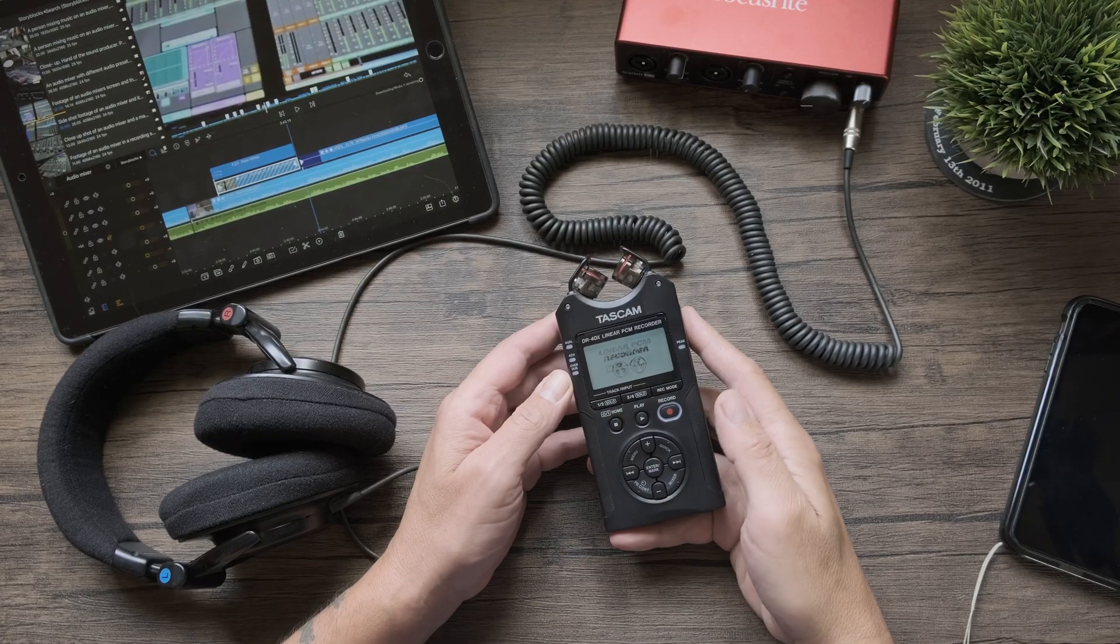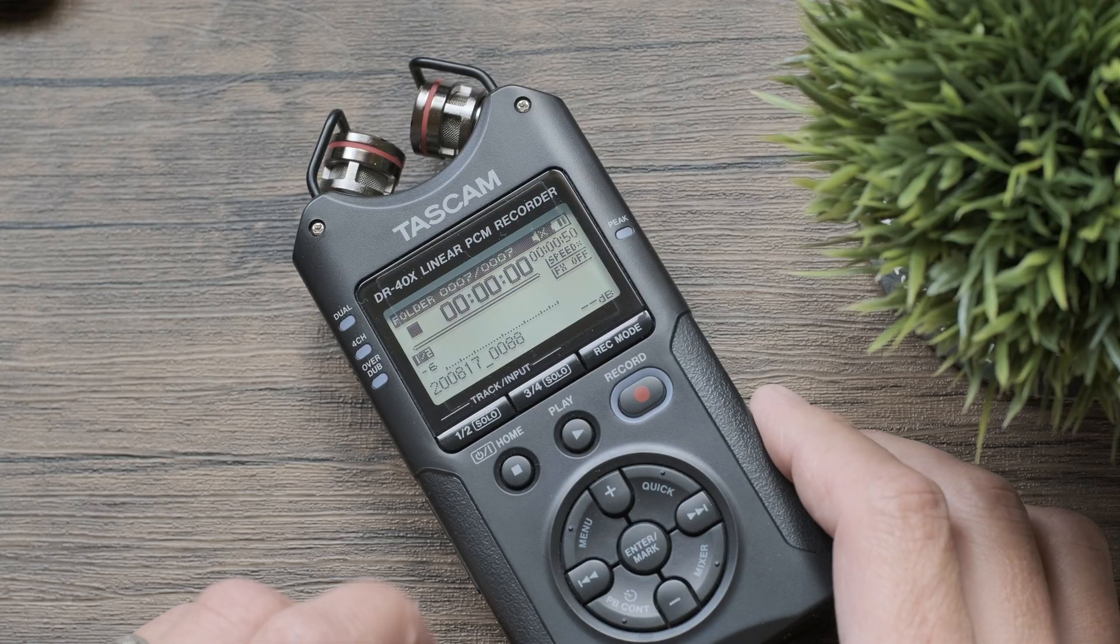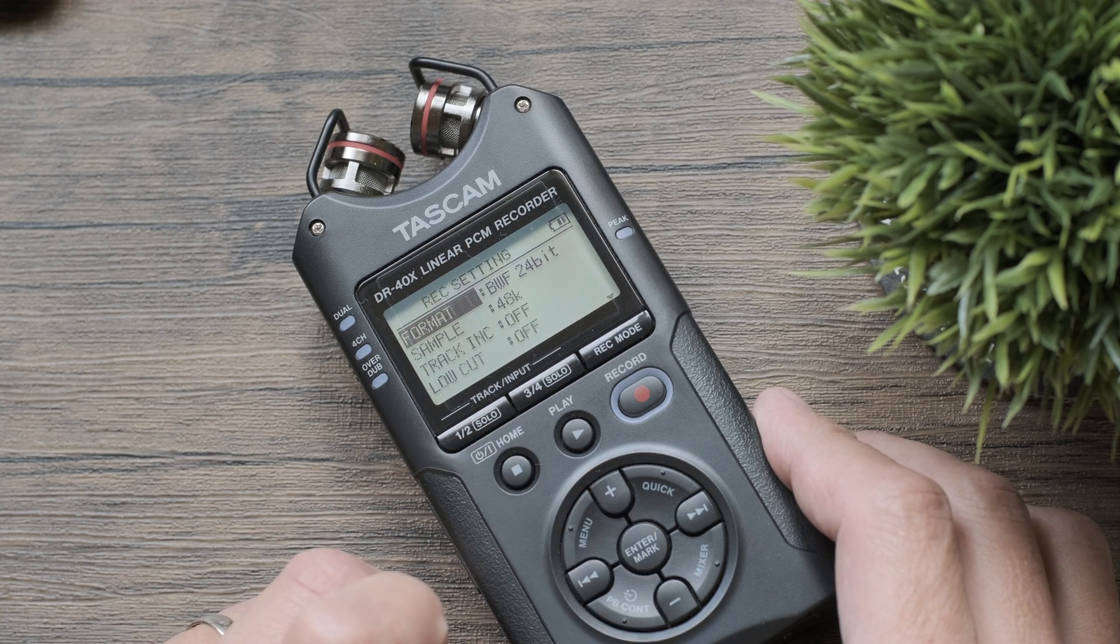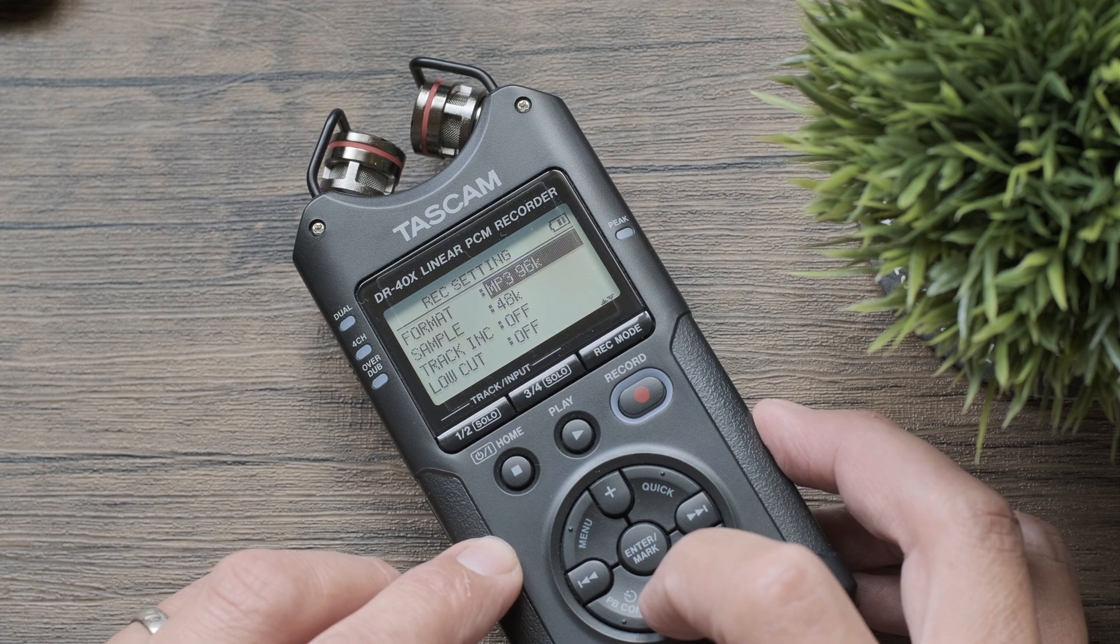Okay so to access the settings on the DR40X hit a menu button and press enter. First we have format. This lets you choose the file type and the bit depth so you've got a choice of MP3, WAV or BWF.